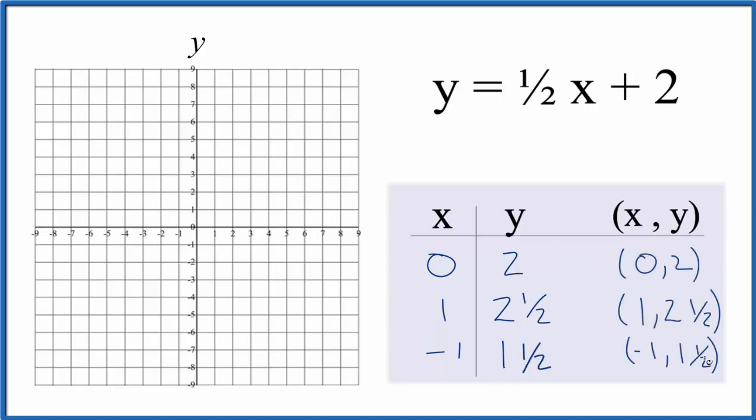So these are the values that we'll graph for the equation y equals one-half x plus two. So for x we have zero, y we have two. On a graph we go to x is zero and y to two. So that's our first point.